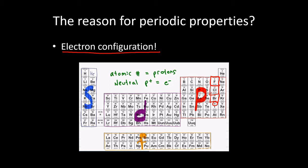The reason why you have something like fluorine with similar properties to chlorine, which has similar properties to bromine, is because their electron configurations are similar. When you have elements with similar electron configurations, they are going to have similar chemistries. They're not going to be exactly the same, obviously, but they are going to be similar.